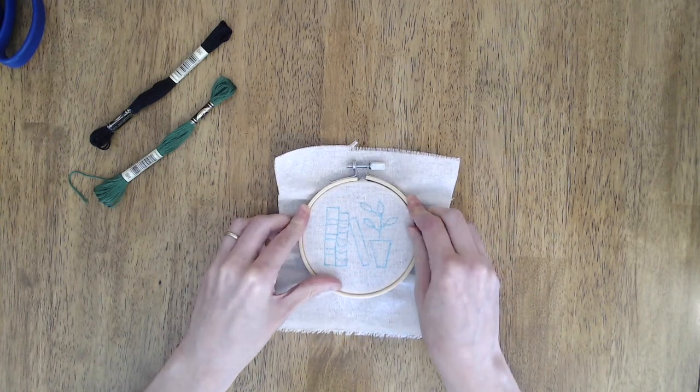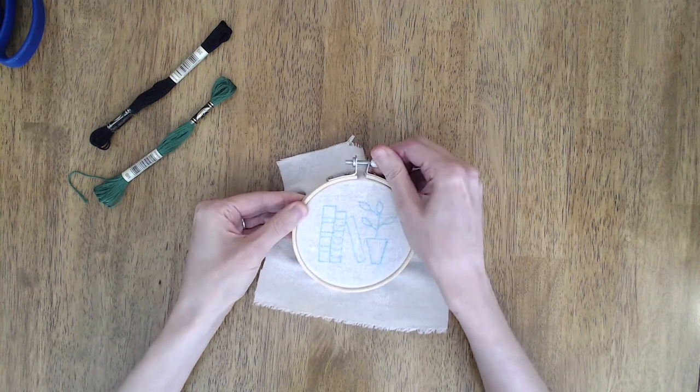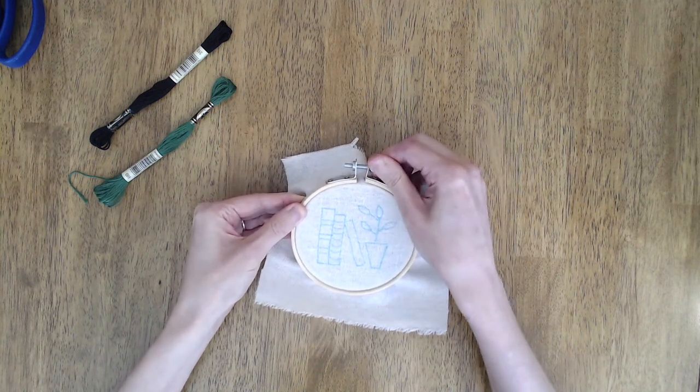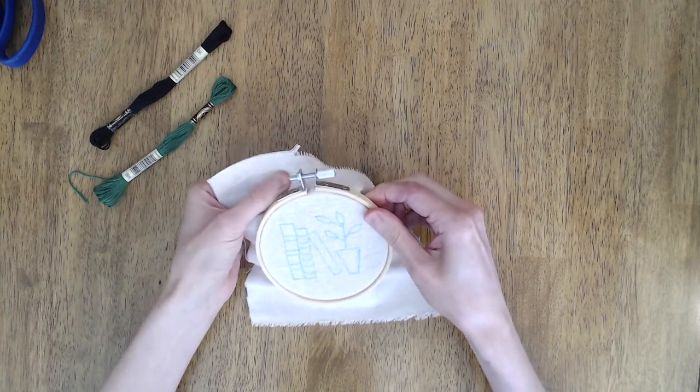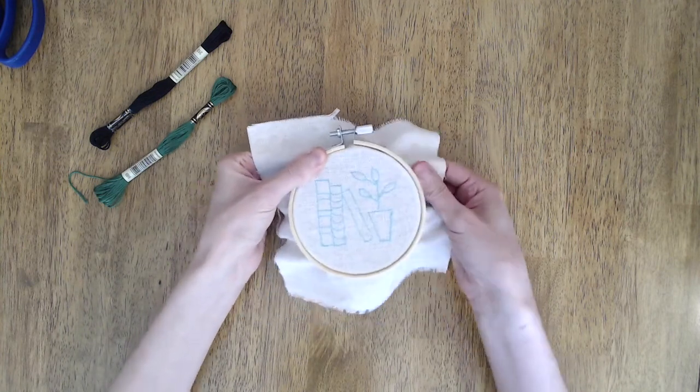You'll want to center the pattern as much as possible and then pull the fabric taut so that there aren't any loose spots there. And then you'll just tighten the screw.